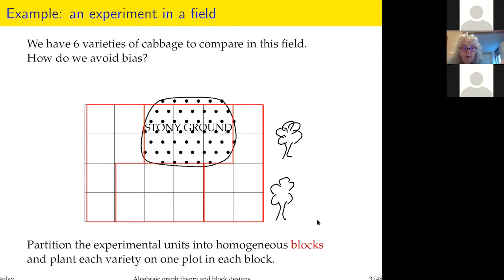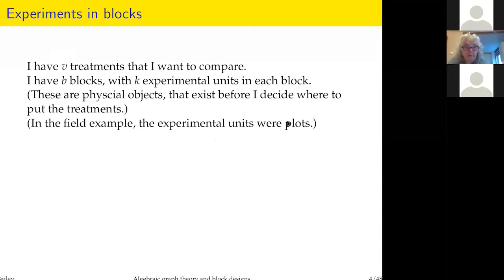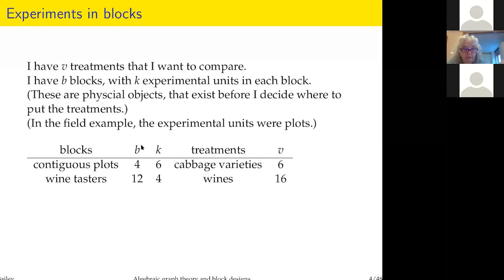This is a standard way of going about things: partition your experimental units into things called blocks. Each block should be as homogeneous as possible. In this case we can plant each variety on one plot in each block. I have V treatments to compare — we say V because we often think of varieties — B blocks, with K experimental units in each block. In English, B and K are the first and last letters of block.